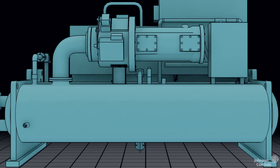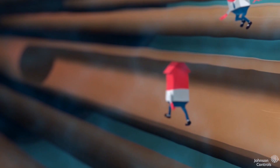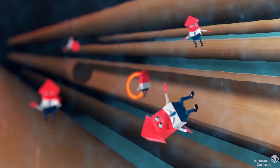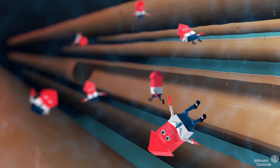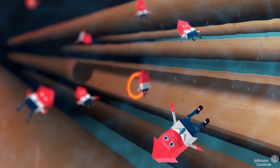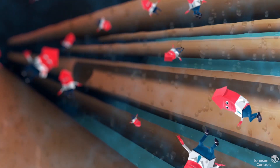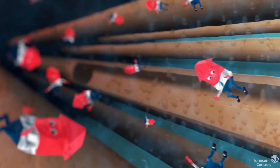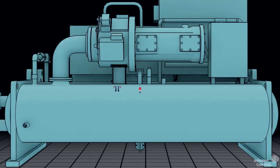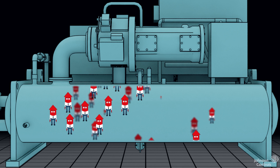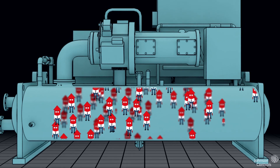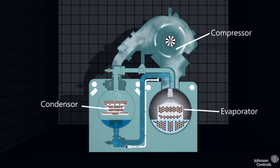As the chilled water returns to the chiller, it passes through narrow tubes that are submerged in a liquid chemical refrigerant. By design, any heat added here will cause this refrigerant to boil, changing state from a liquid into a gas. Mr. BTU can't hang around here long though, as a chiller is not designed to store heat energy.